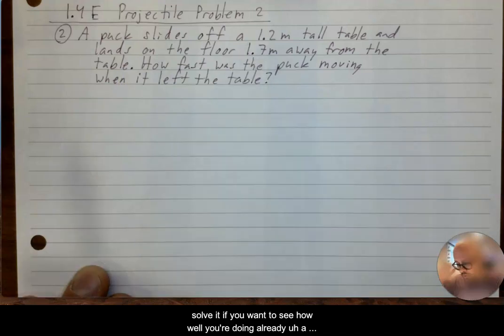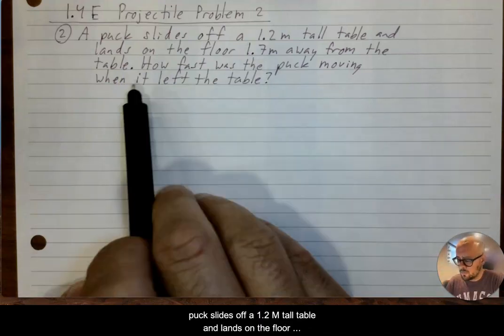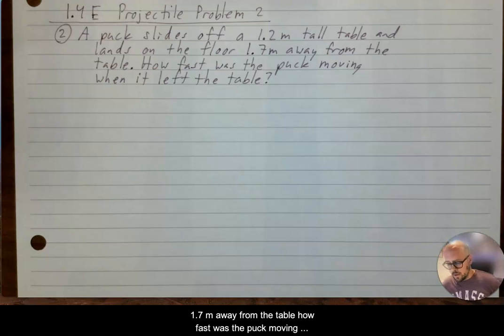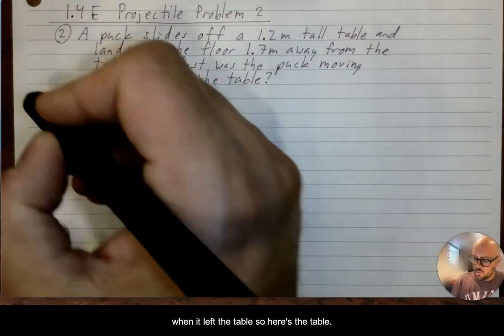A puck slides off a 1.2 meter tall table and lands on the floor 1.7 meters away from the table. How fast was the puck moving when it left the table?